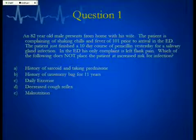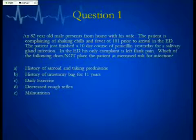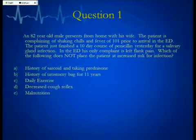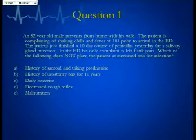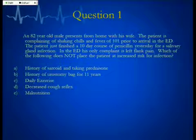We're going to do three questions right up front. You can log in with your answers and we'll see where you are, but I'm not going to give you the answers right now — they'll pop up again throughout the presentation. These are real cases I had in the ER. First: an 82-year-old male from home with shaking chills and a fever of 101, just finishing a 10-day course of penicillin for a salivary gland infection, now with only left flank pain. Which of the following does NOT place the patient at increased risk for infection? A: sarcoid on prednisone; B: urostomy bag for 11 years; C: daily exercise; D: decreased cough reflex; E: malnutrition.